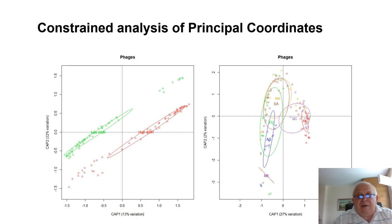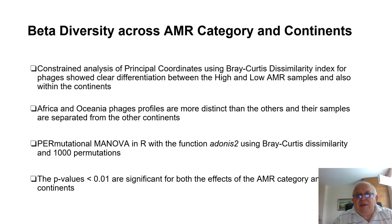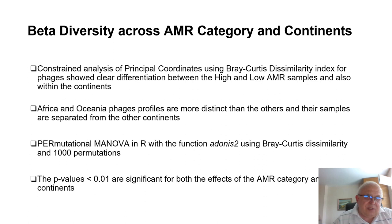The Bray-Curtis analysis is presented on this slide showing the constrained analysis within the methodology of principal coordinates. On the left-hand side are the high and low AMR categories, and on the right-hand side is how they are spread within the continents. Some continents are not very well represented. Regarding beta diversity across the antimicrobial resistance category and the continents, African and Oceanian phage profiles are more distinct than the others, and their samples are separated from other continents — this depends on the data, which was probably not very representative.